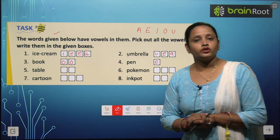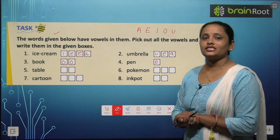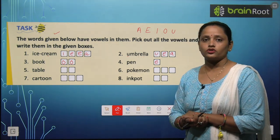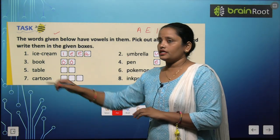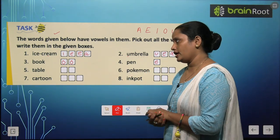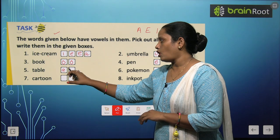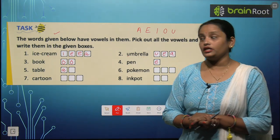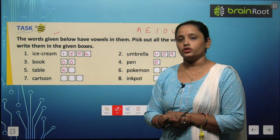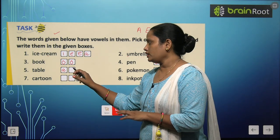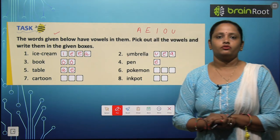Now let's move on to the fifth one which is table. Let's quickly look at the spelling of table. T is a consonant. A is a vowel. Next, B and L — both are consonants. And E is our vowel.